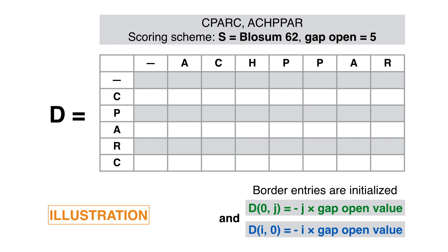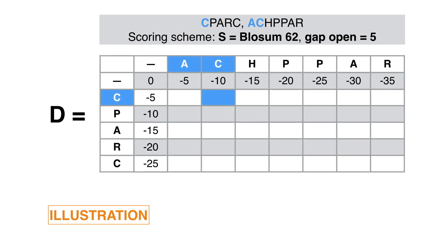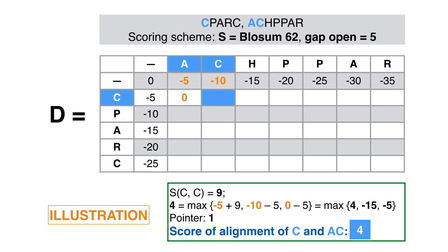Computation of D: For the sake of simplicity, we use here a linear penalty gap and do not show the array of pointers. The recursion is initialized by filling the borders of the array with negative multiples of the gap open value. Here is the detail of the second step in the computations. To the left of the blue cell is a 0 obtained in the first step. The -5 across the diagonal and the -10 above the blue cell were assigned in the initialization. Now, according to the recursive formula whose computations are shown in the box below the array, the blue cell or D equals -4.